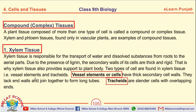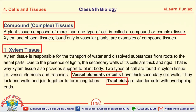The next topic is compound tissues. What are compound or complex tissues? A plant tissue composed of more than one type of cells is called a compound or complex tissue. Xylem and phloem tissues, found in vascular plants, are examples of compound tissues.